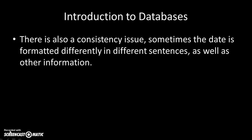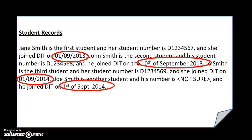Another problem with storing data in a notepad file is a lack of consistency with the way we express the same kinds of information. For example, how we express the date varies — from 19.2013, to 10th of September, to 19.2014, and then 1st of September 2004. So if we were searching for everybody who enrolled in September, we'd have to look for '09', the full word 'September', the abbreviation 'Sept.', and maybe even 'Sept' without a full stop. That's very awkward.